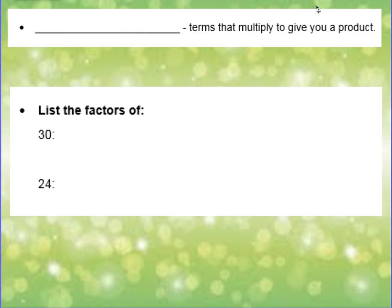Our first definition: this is a word that refers to the terms that you can multiply to give you a product. This is called factors.